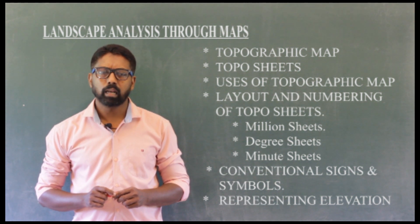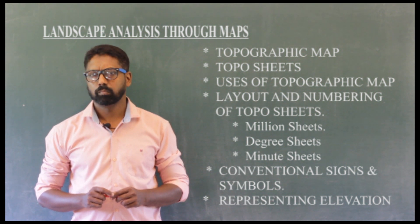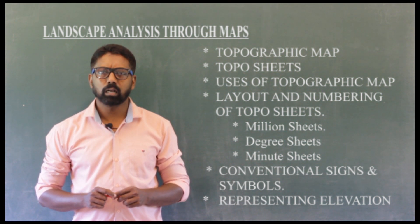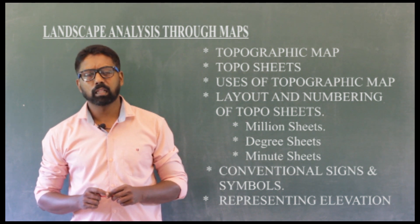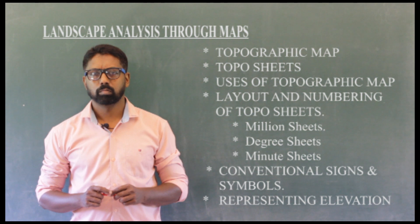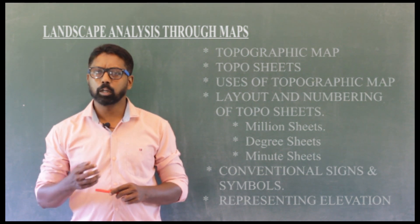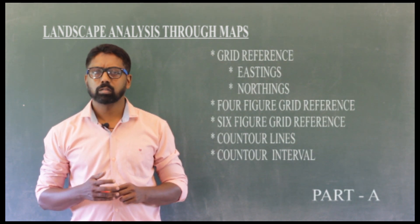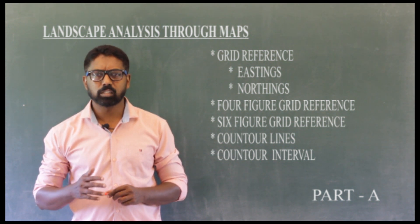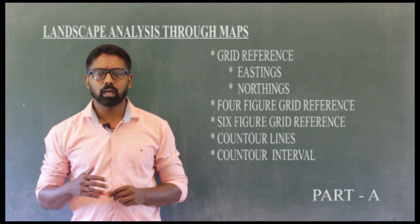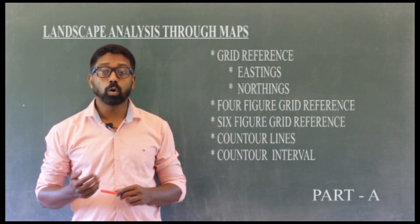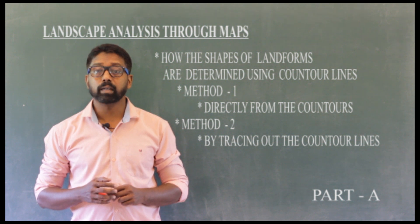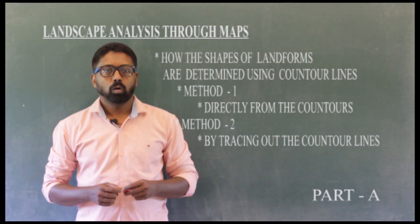The chapter covers: layout and numbering of toposheets — the million sheet, degree sheet, and minute sheet. Next, conventional signs and symbols for representing elevation. Then grid reference — eastings and northings, four-figure grid reference, and six-figure grid reference.